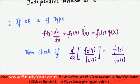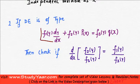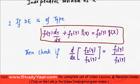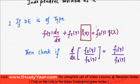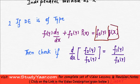My first step would be I would have to check if my DE is of this type. What is this type? This is f1(y) into dy by dx plus another function of y into a function of x is equal to another function of y into a function of x.